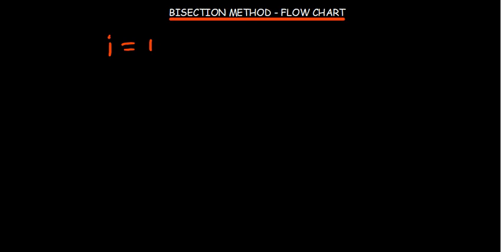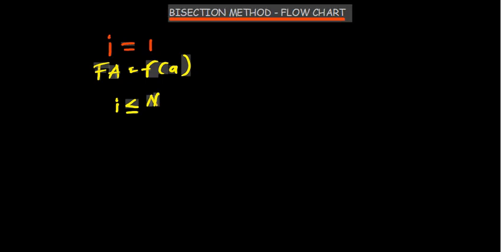We initialize that first of all. And then the first thing that you saw in the program was we needed to find the function of a, find f of a. So i is equal to 1 and then we need to find the function of a, FA is equal to f(a). So that's what we have so far.